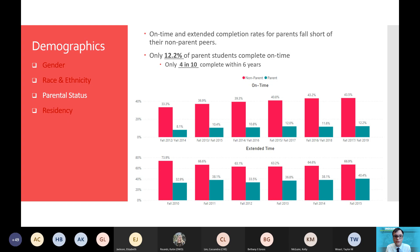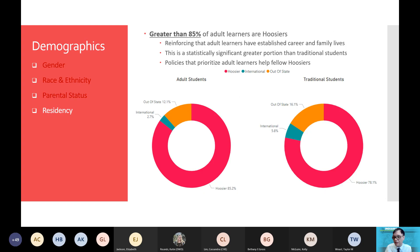Finally, one very important demographic that re-emphasizes that adult learners are embedded within our communities is simply that 85 percent of Indiana adult learners are Hoosiers. They come from our local communities. They have established career and family lives. This proportion of adult learners from Indiana is statistically significantly greater than that of traditional students. So when we think about adult learners and we prioritize student services, financial aid, and higher education policies — those policies that prioritize adult learners are really policies that help our fellow Hoosiers and neighbors.